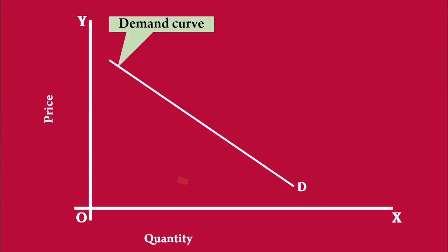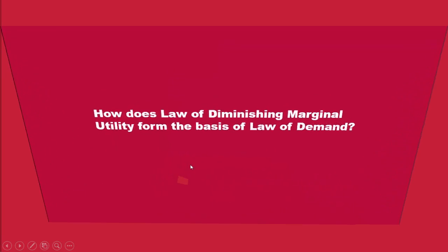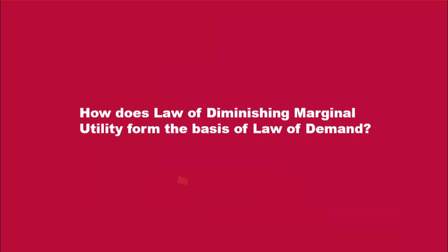In this tutorial we are going to account for why consumers consume less at a higher price and more at a lower price. In simple terms, we are going to see how the law of diminishing marginal utility forms the basis of the law of demand.